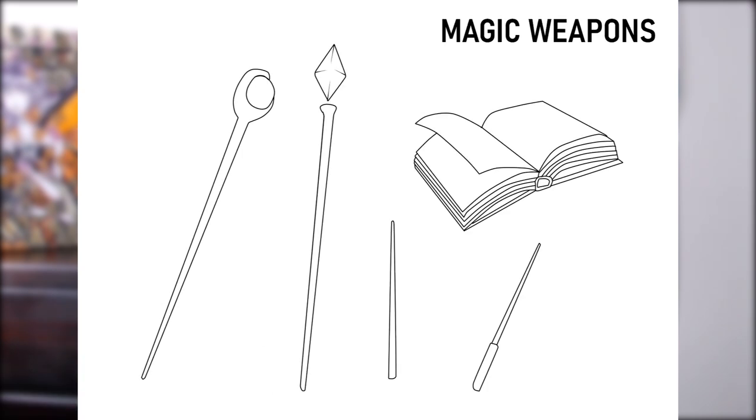Then you have magic weapons, which might be a staff, a wand, or grimoire — anything that is a magic ranged type of weaponry. Some weapons in popular anime and manga might be a combination of multiple types, but most weapons out there will be based off these main weapon types.